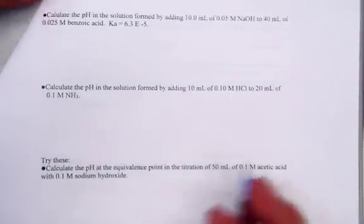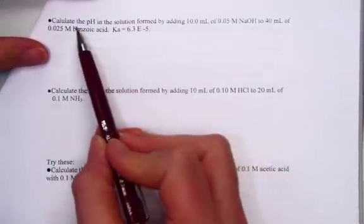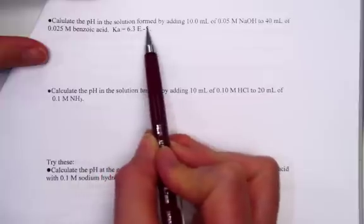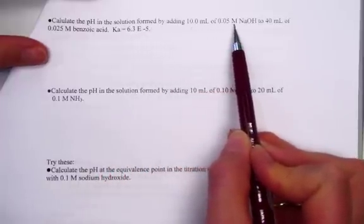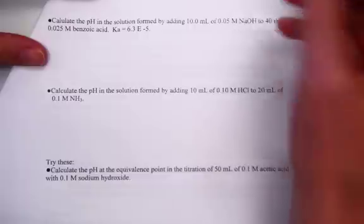Let's examine a next titration problem. We're being asked to calculate the pH in the solution formed by adding 10 milliliters of a 0.5 molar sodium hydroxide.